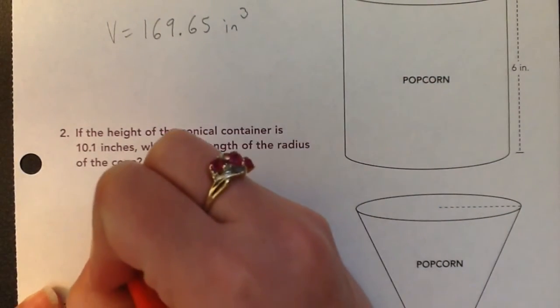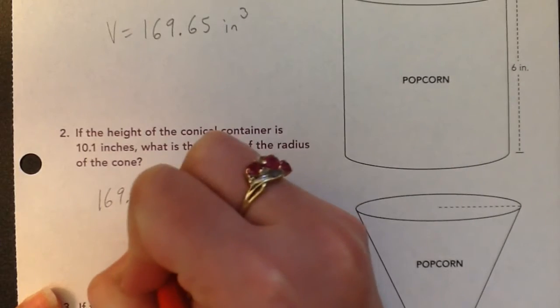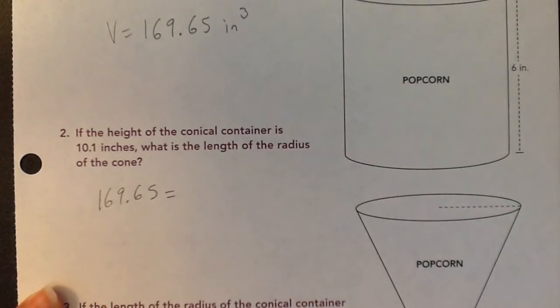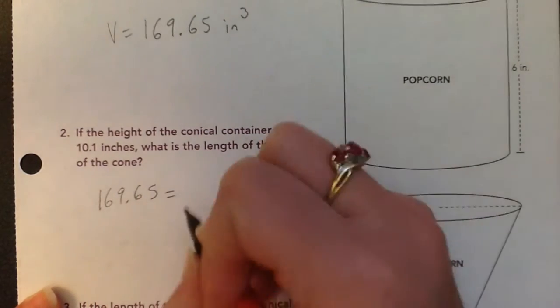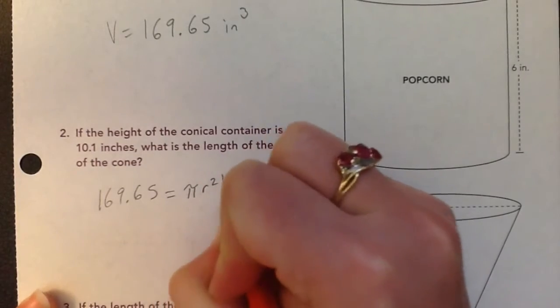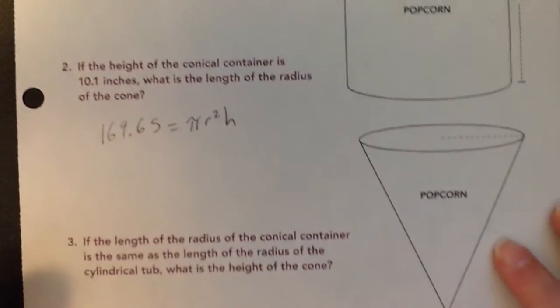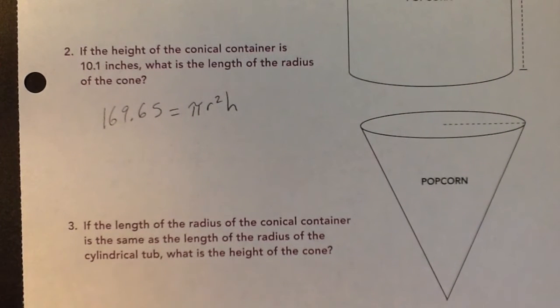So we have that 169.65 is the volume and it's equaling pi radius squared times height. We have that the height is 10. So what we can do is we can use Google to work backwards to find the radius.